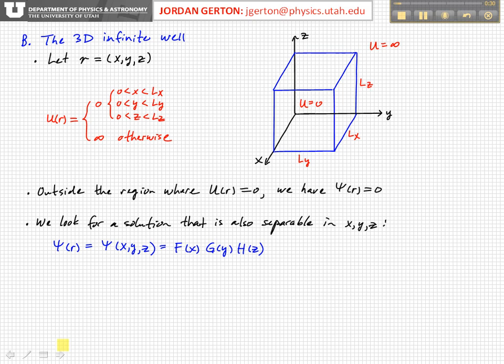So in the same way that we found in the one-dimensional case, outside the box, outside the region where U of R equals zero, we get the wave function has to be zero. Because we have an infinite potential there, that means we can't have, there should be no probability, no chance of finding the particle there, even quantum mechanically. And so in order to assure that, we have to have that the wave function is zero, so that when we square the wave function, we always get zero.